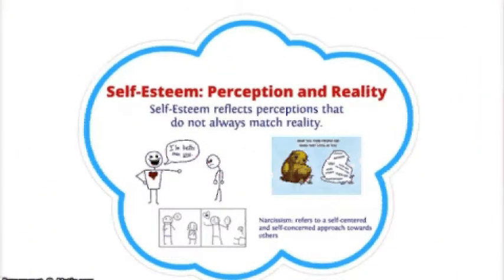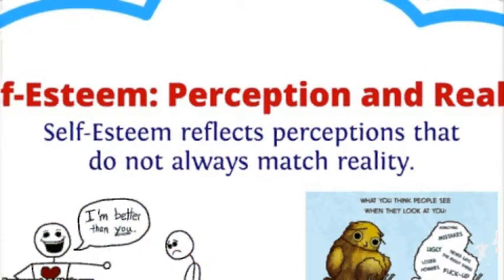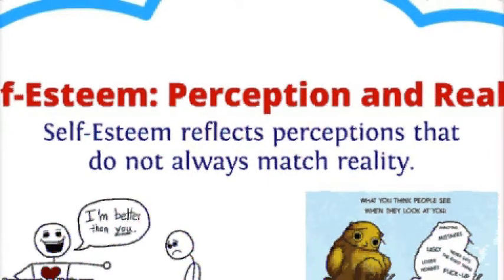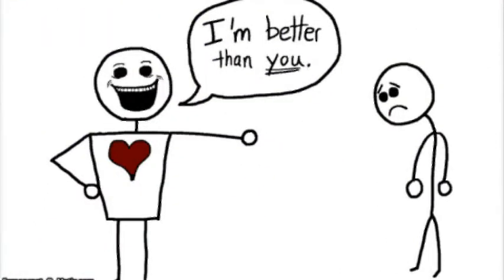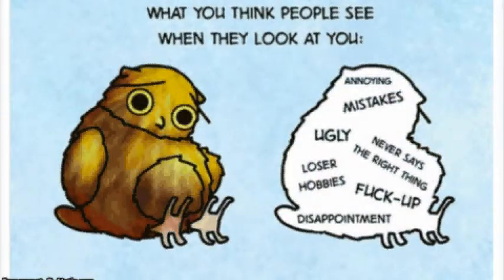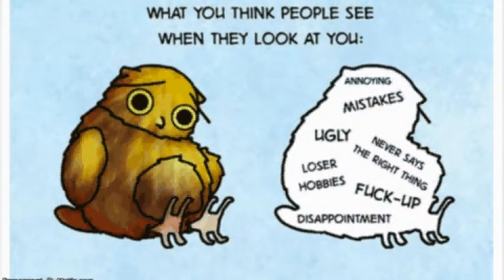Self-esteem reflects perceptions that do not always match reality. An adolescent or emerging adult's self-esteem might indicate a perception about whether he or she is intelligent and attractive, but that perception may not be accurate. Thus, high self-esteem may refer to accurate, justified perceptions of one's worth and accomplishments, but it can also indicate an arrogant, grandiose, unwarranted sense of superiority over others. In the same manner, low self-esteem may suggest either an accurate perception of one's shortcomings, or a distorted, even pathological insecurity and inferiority.